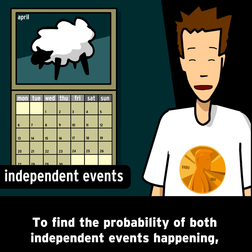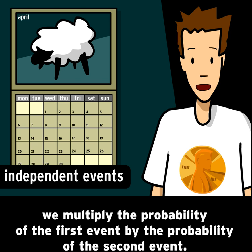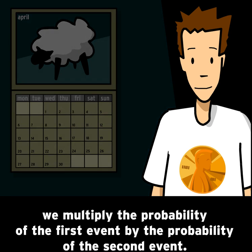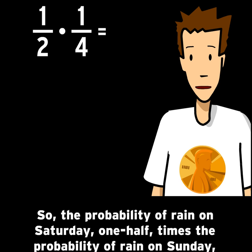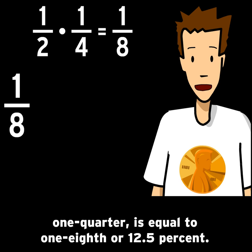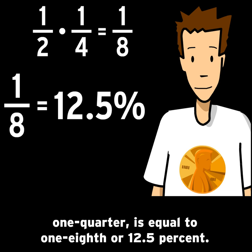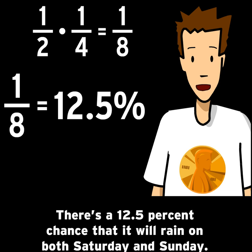To find the probability of both independent events happening, we multiply the probability of the first event by the probability of the second event. So the probability of rain on Saturday, one-half, times the probability of rain on Sunday, one-quarter, is equal to one-eighth, or 12.5%. There's a 12.5% chance that it'll rain on both Saturday and Sunday.